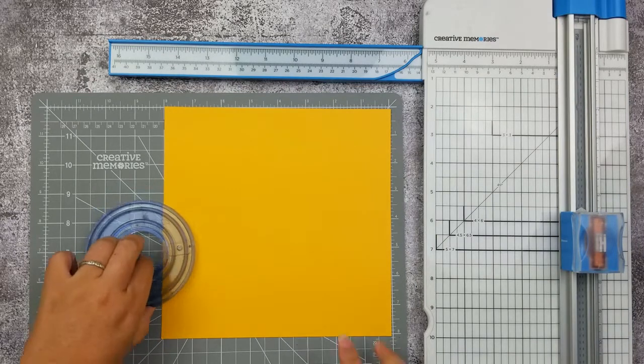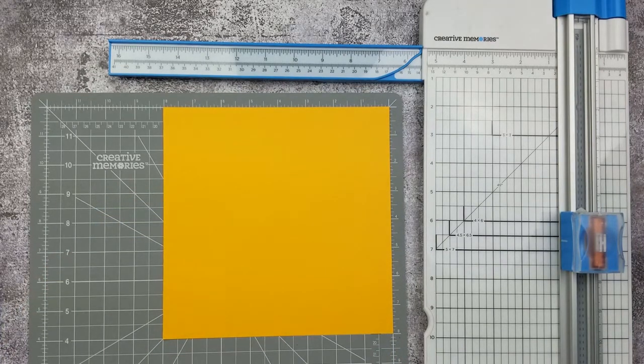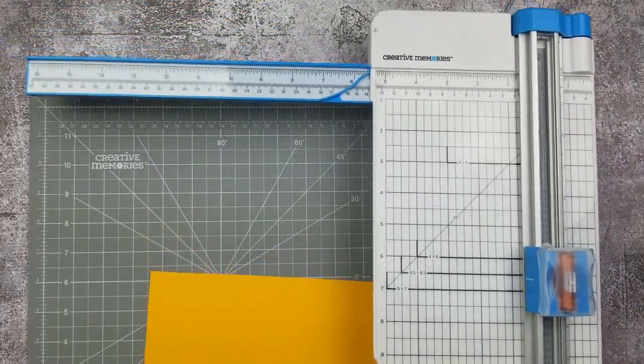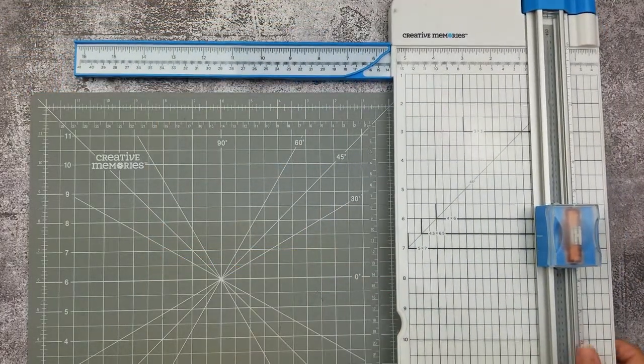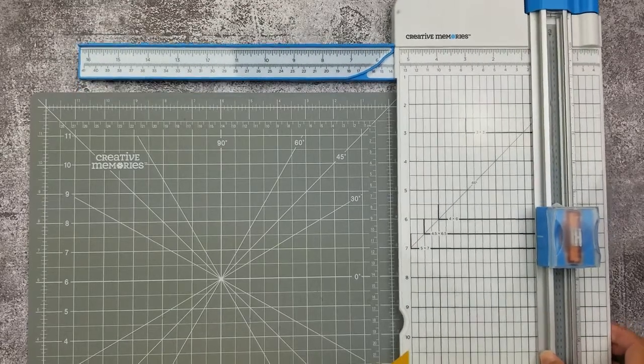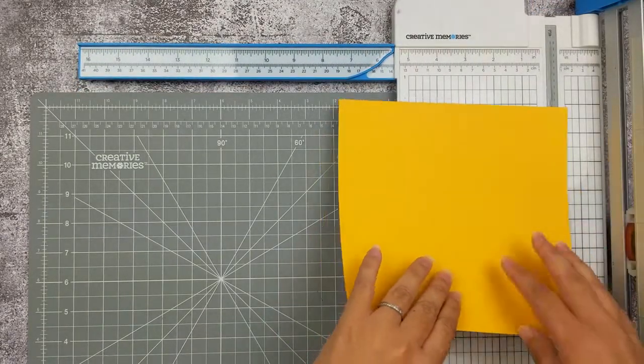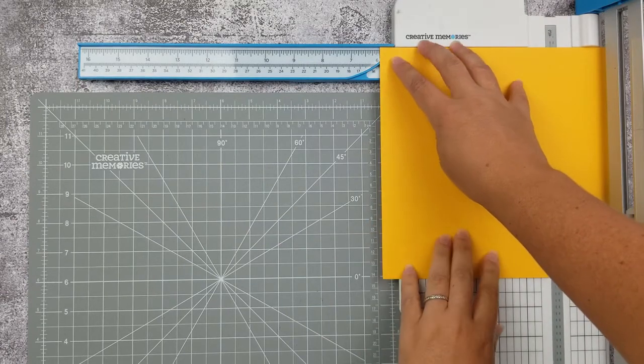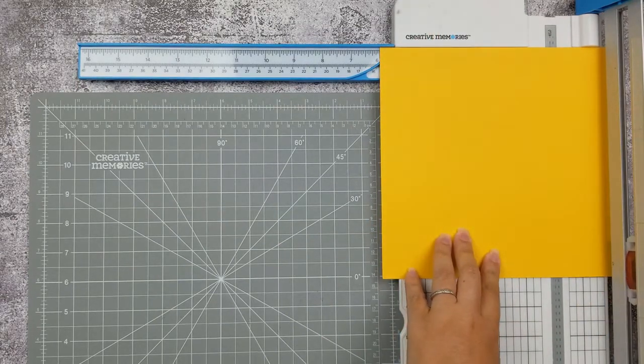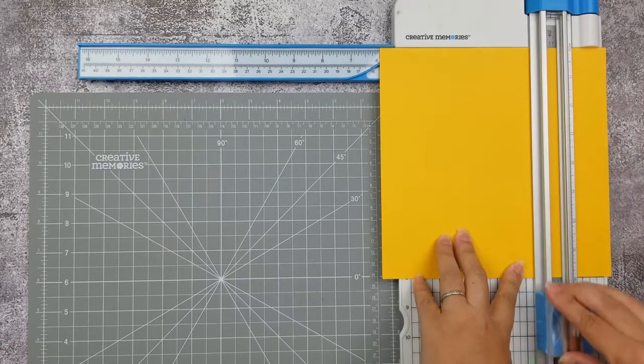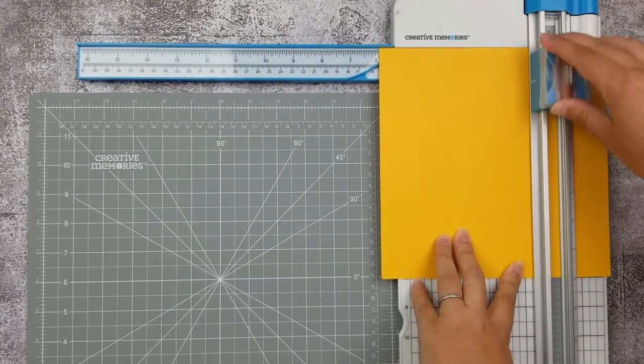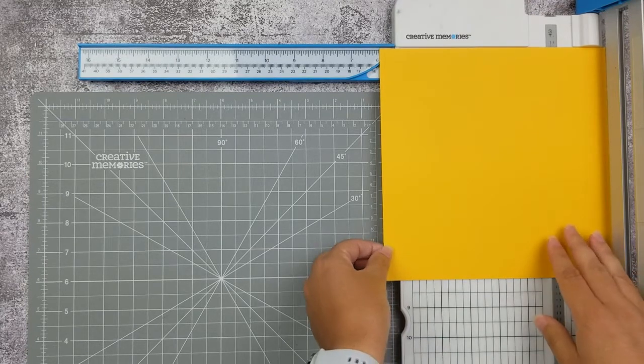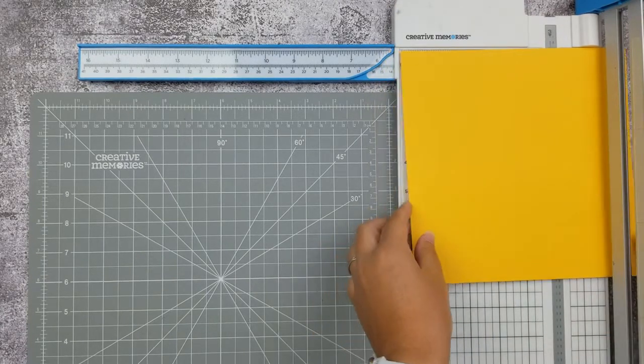Now we're going to take our 8x8 sheet of cardstock and I'm going to use my trimmer to make scoring lines at the 6 and 2 inch marks. So we'll start with 6, then move down to 2.